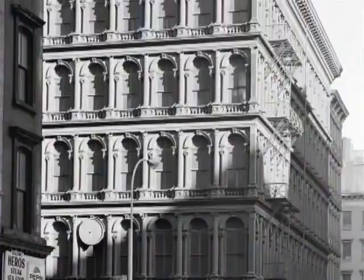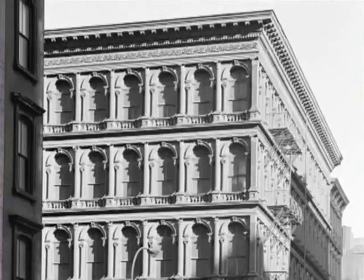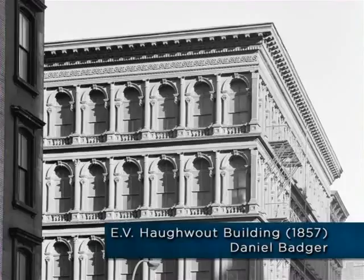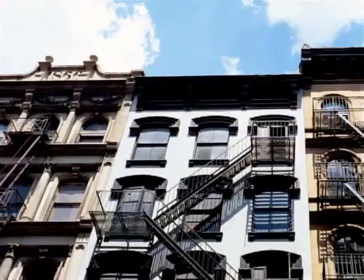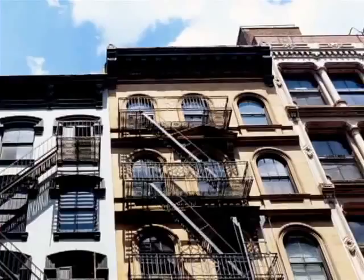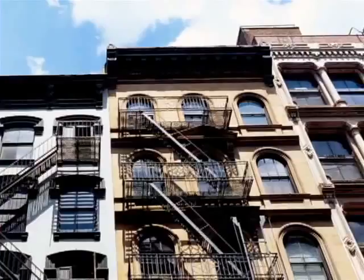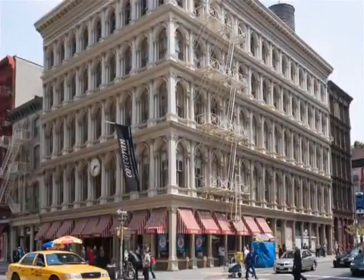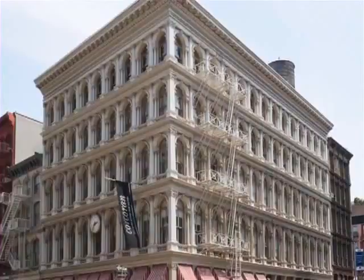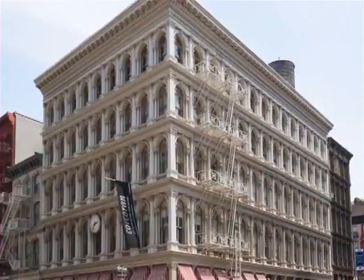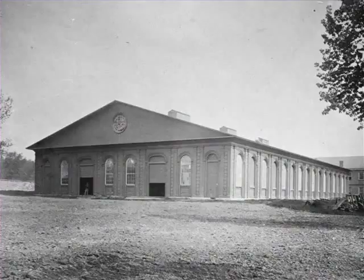In the 1840s, Daniel Badger earned considerable notoriety for his cast iron facades, which he installed on many buildings in New York City. The E.V. Howitt Building of 1857 is a fine example. These iron fronts became so popular in one particular area of New York City that it came to be called the Cast Iron District — over 200 cast iron facades can still be found there today, and it eventually acquired the nickname SoHo. The iron wall on the front of the Howitt Building is a structural element — a bearing wall carrying load in exactly the same way as the masonry wall it replaced.